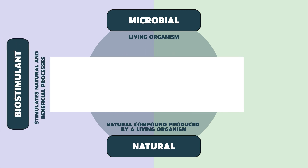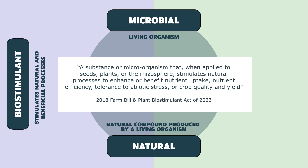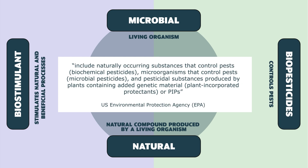We can also categorize biological amendments by their activity. A biostimulant is a substance or microorganism that, when applied to seeds, plants, or the rhizosphere, stimulates natural processes to enhance nutrient uptake, nutrient efficiency, tolerance to abiotic stress, or crop quality and yield. A biopesticide includes naturally occurring substances that control pests, biochemical pesticides, microorganisms that control pests — known as microbial pesticides — and pesticidal substances produced by plants containing added genetic material, called plant incorporated protectants, or PIPs.